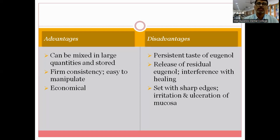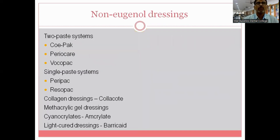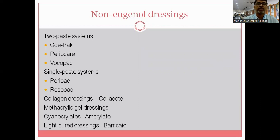Non-eugenol dressings include the two-paste system, single-paste system, collagen-based dressings, metallic gel dressings, cyanoacrylates, and light-cure dressings. The most popular two-paste systems are Coe-Pak and Periocare, and also Waco Pack. For single-paste systems, you have Peripac and Risopac. For cyanoacrylates, there are brands like Ankylate. The light-cure dressing is available commercially as Barricade.